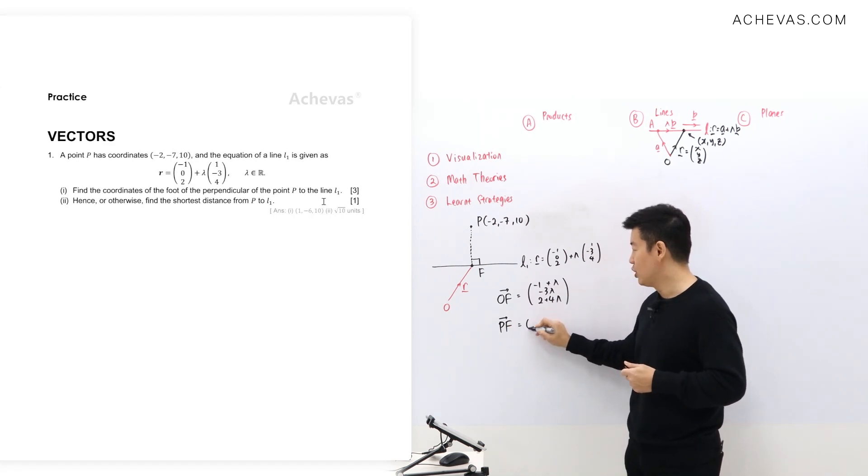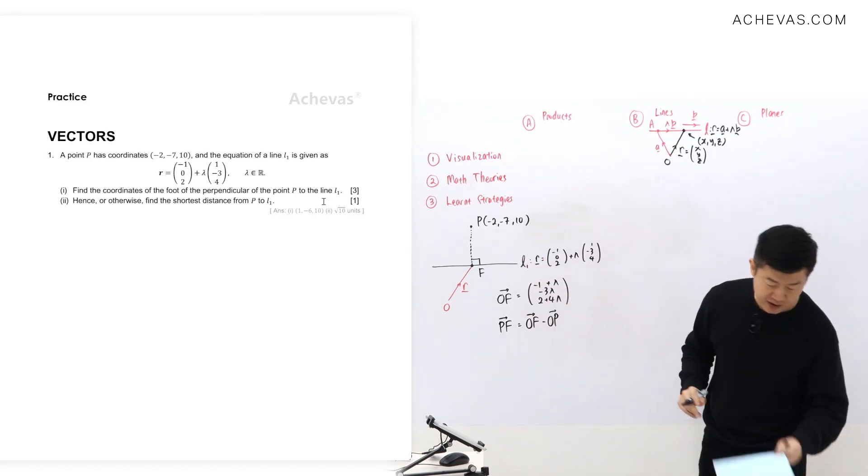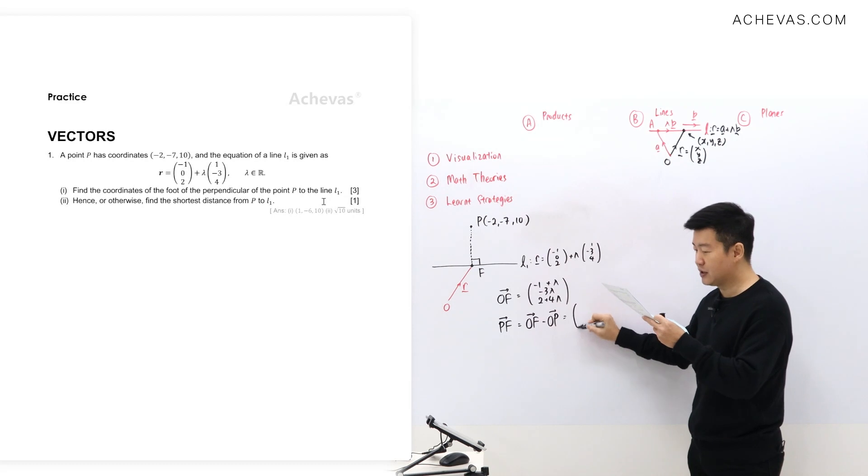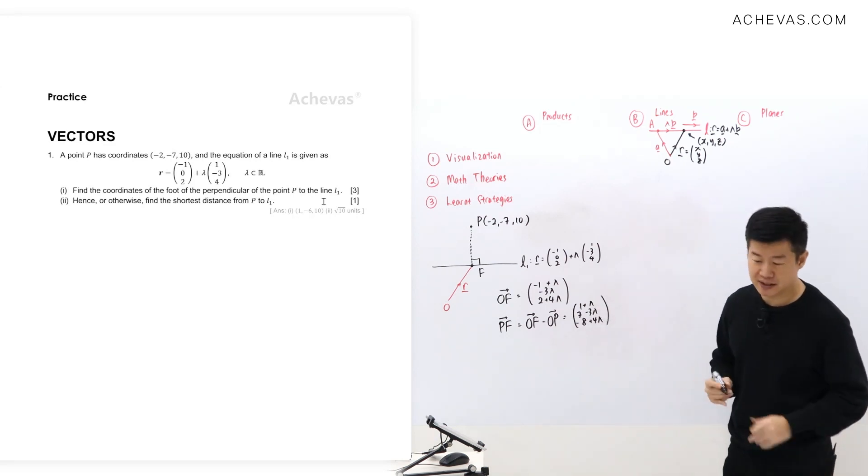PF is equal to OF, OF is this, minus away OP. OP is negative 2, negative 7, 10. This is going to give us 1 plus lambda, 7 minus 3 lambda, minus 8 plus 4 lambda. PF is this.